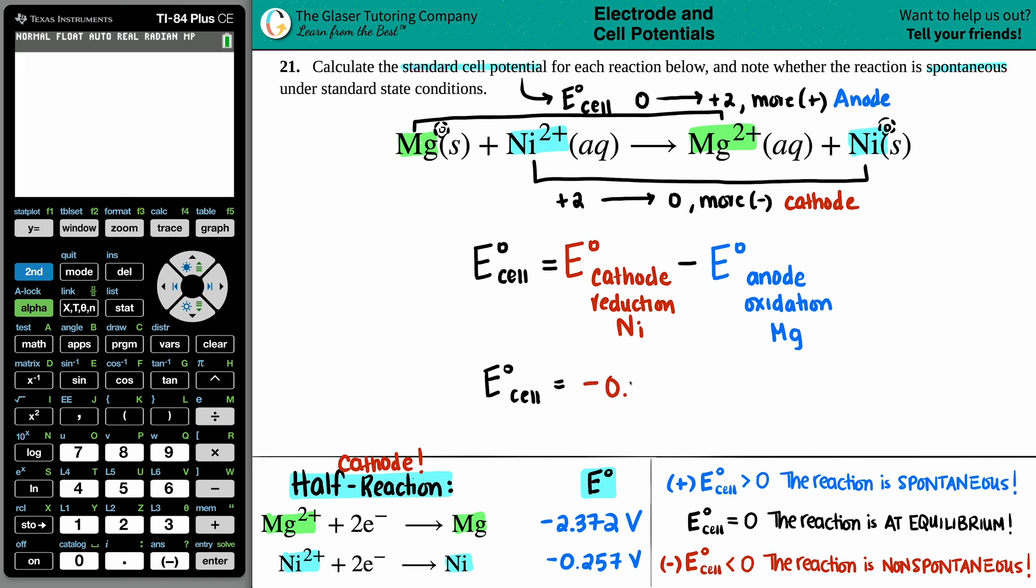That's the negative 0.257. And I'm just going to subtract that by the anode, which is a negative 2.372. And lo and behold, we're going to have our answer.